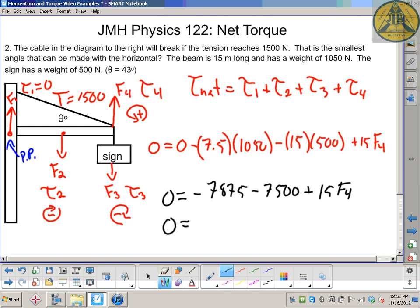So I'll work that out carefully. Negative 15,375 plus 15 F4.